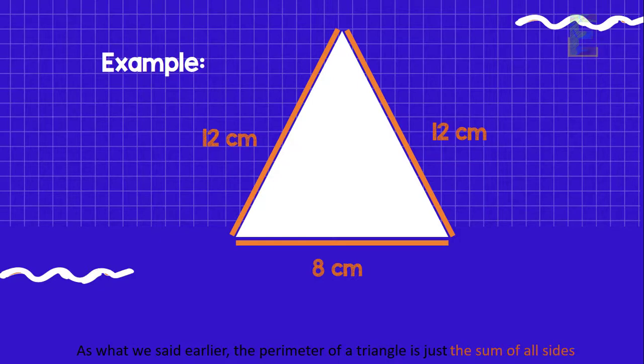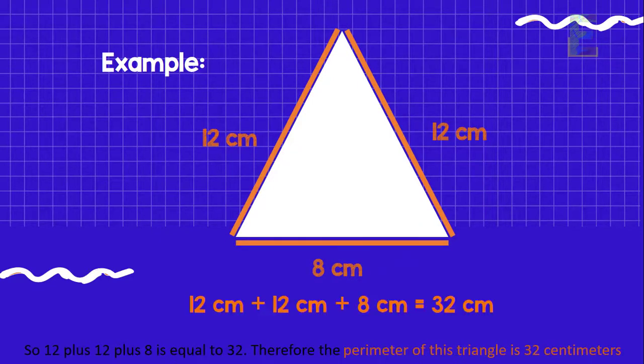As what we have mentioned earlier, the perimeter of a triangle is just the sum of all sides. So 12 plus 12 plus 8 is equal to 32. Therefore, the perimeter of this triangle is 32 cm.